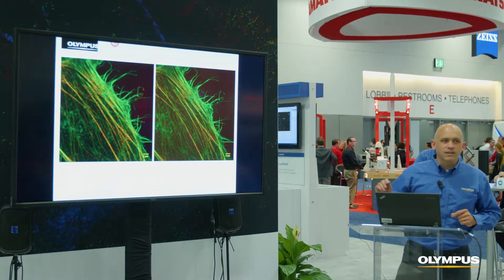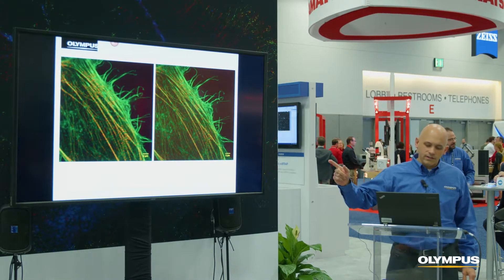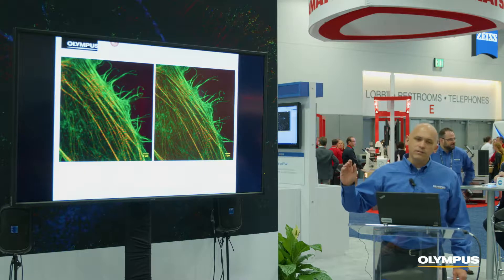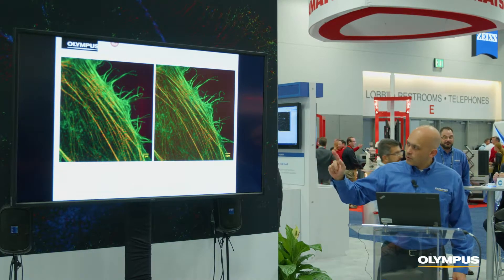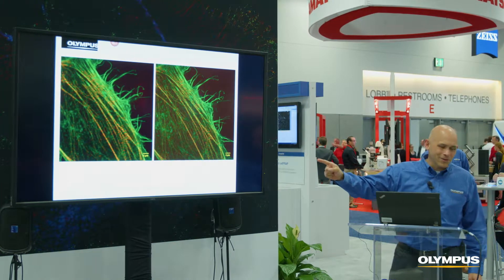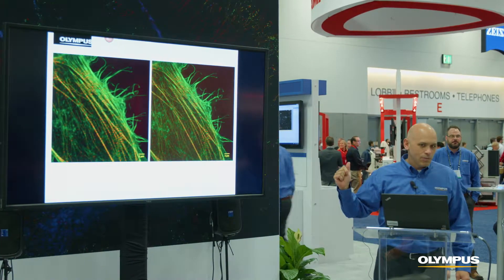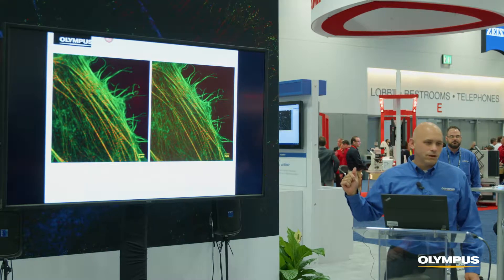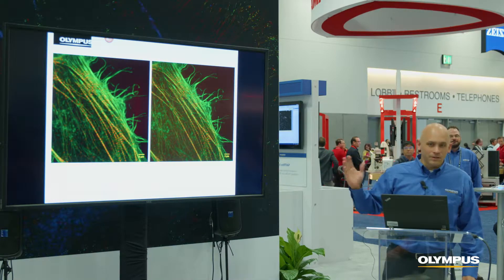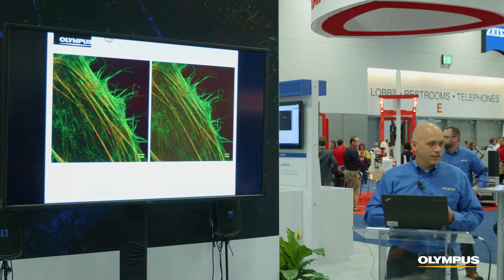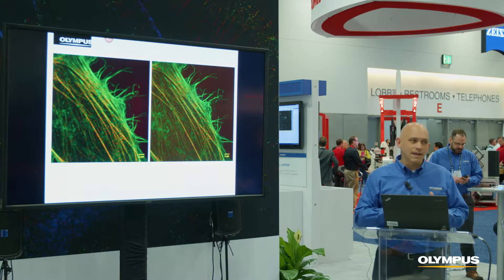This is an example of super resolution in a HeLa cell. On the left is about 200 nanometer confocal, and on the right we have a SIM image which has about 120 to 150 nanometer resolution. Typical comments when people see these sort of results in their work is that they will observe phenomena or structure that they haven't seen before.